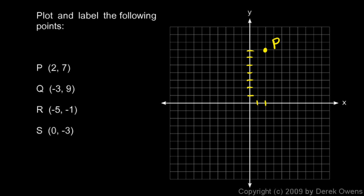Point Q is at the position negative 3 — that's my x — so I come over to negative 3. And my y value goes up to 9, so that puts me at this point right here. That's point Q, so I'll label that. I draw these little dotted lines in here just to help me visually find that point, and it's okay to do that and leave them there. Point R is the point negative 5, negative 1. From the origin I need to come over 5 to the left, and then go 1 down in the negative y direction. This point corresponds to negative 5 on the x axis and negative 1 on the y axis. So that is point R.